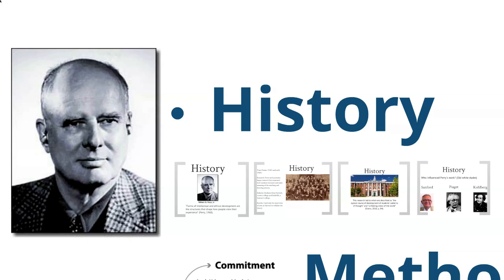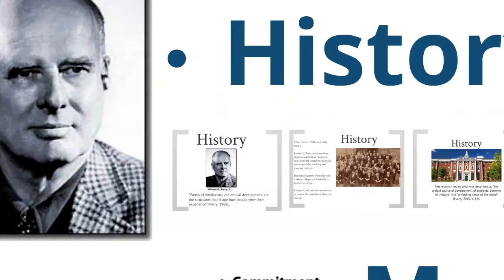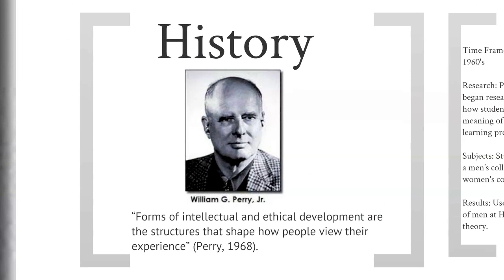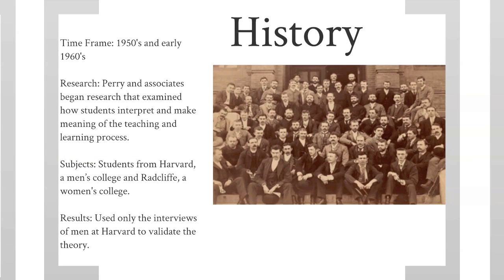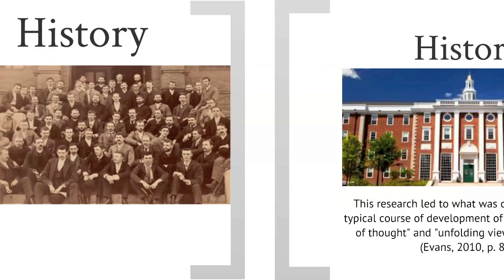Perry says, forms of intellectual and ethical development are the structures that shape how people view their experience. Perry conducted research in the 1950s and 1960s using men from Harvard and women from Radcliffe. However, Perry only used the interviews of the men to validate his theory.